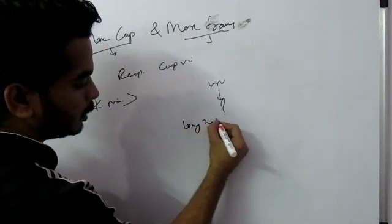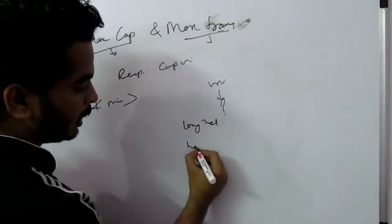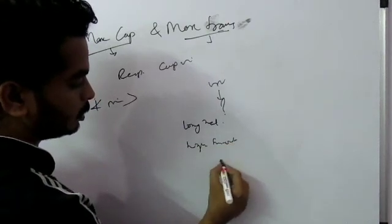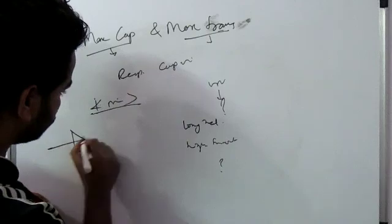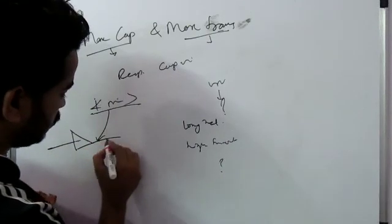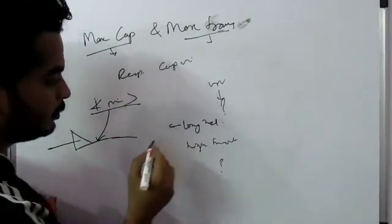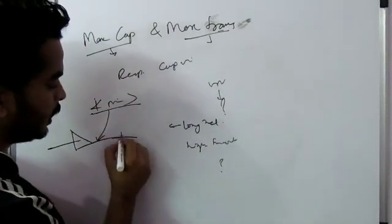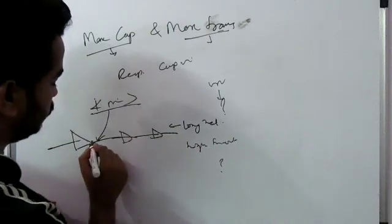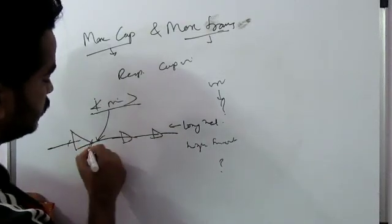Is this due to long net, high fanout, or something else? After getting this pin, if it is long net, we will try to reduce the net if possible. Otherwise, we will add buffer in the long net so as to make this pin drive the data properly.